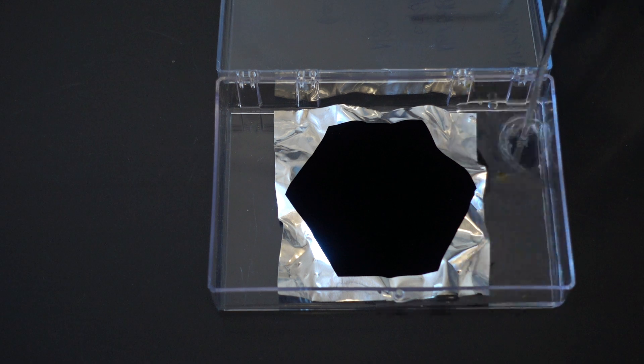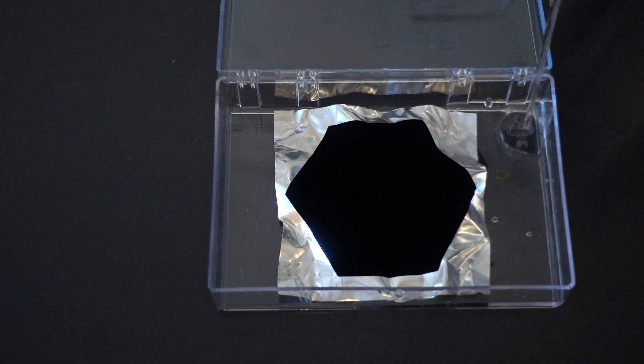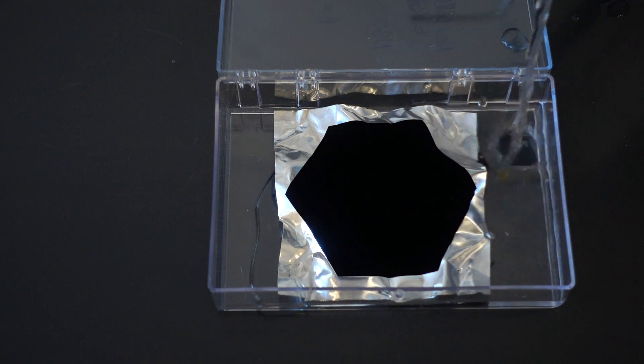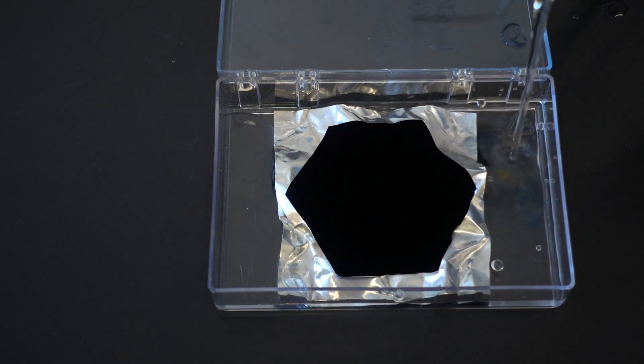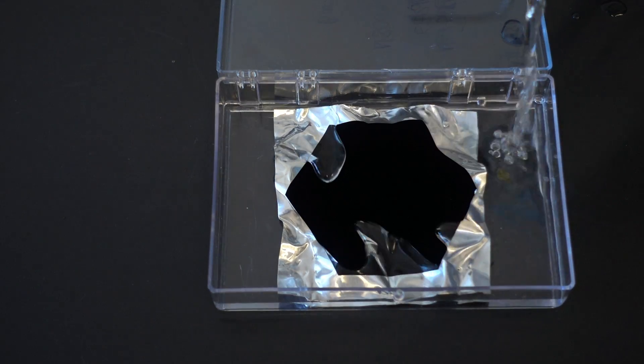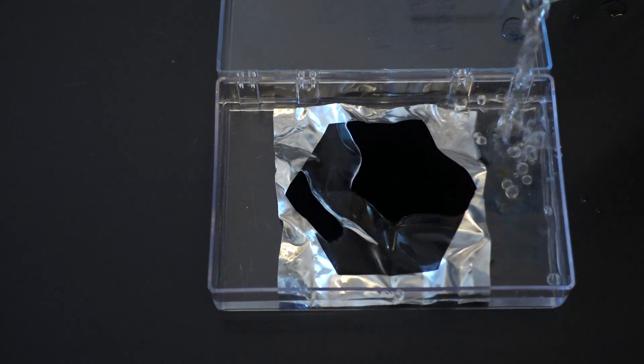This is a Vantablack coated aluminium foil, and we're going to fill and submerge it in water. Water has a very different refractive index from that of the Vantablack surface, so it will show up the 3D features quite easily.